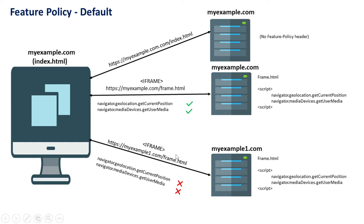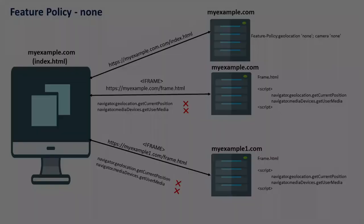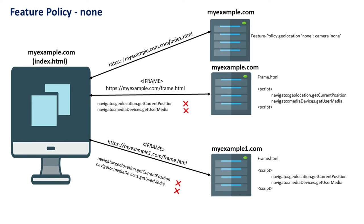So myexample1.com/frame.html trying to access the same APIs will be blocked and you will get a permission denied exception. Now let's see the behavior of setting the value as none. Setting none for geolocation and camera features blocks access irrespective of origin — it is blocked for the same document, same-origin frames like myexample.com/frame.html, and also for the cross-origin myexample1.com/frame.html.